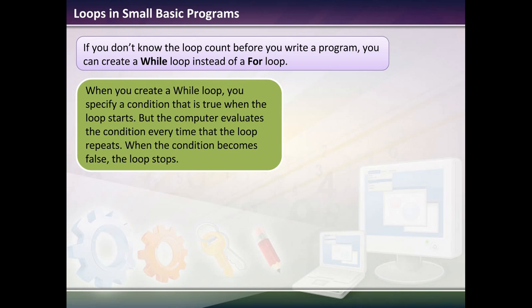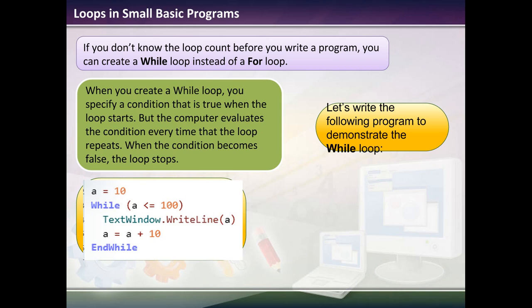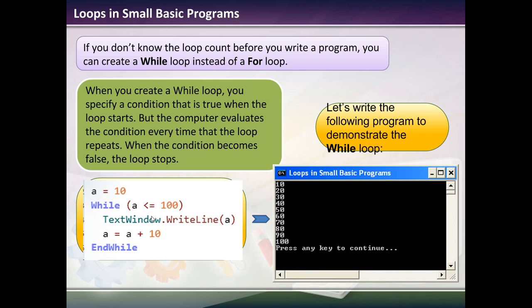If you don't know the loop count before you write the program, you could create a while loop. When you create a while loop, you specify the condition that is true when the loop starts. But the computer evaluates the condition every time that the loop repeats. When the condition becomes false, the loop stops. Let's write the following program. If we say that a equals 10, while a is less than or equal to 100, print off a. Then in the next line, it will say a is then going to be equal to a plus 10. And this will crank through until our value for a is greater than 100.